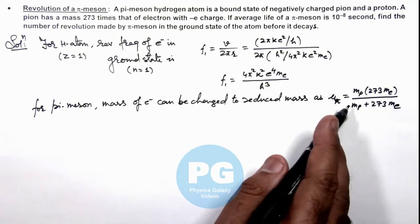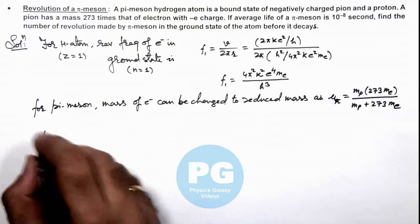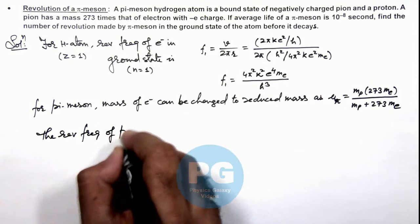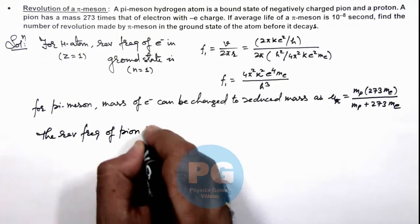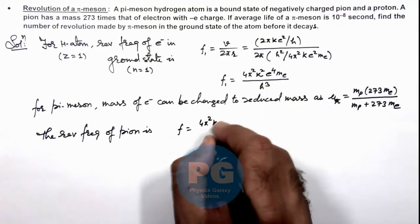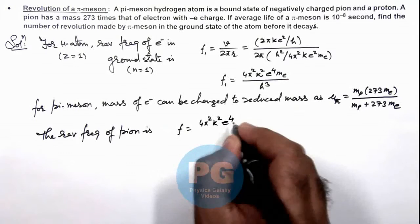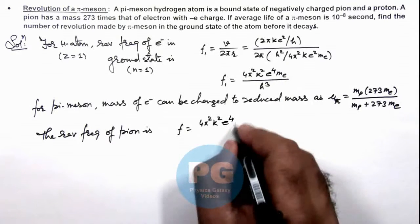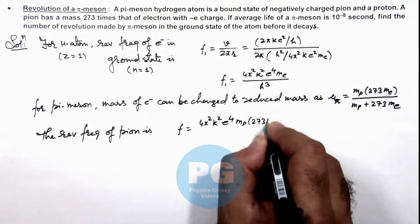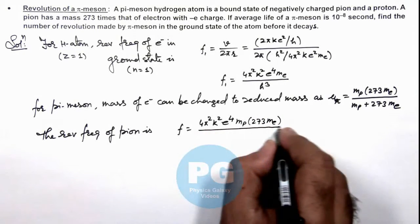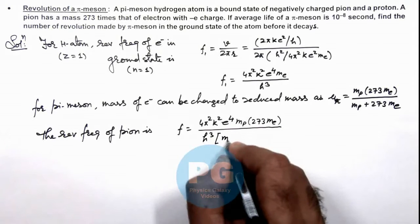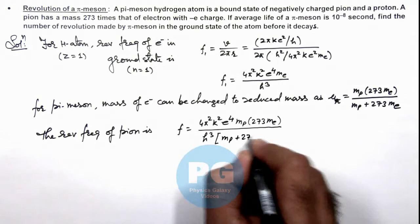So we can write the revolution frequency of pion as: this frequency we can write as 4π²k²e⁴ times the reduced mass, which is (m_p × 273m_e) divided by h³ multiplied by (m_p + 273m_e).